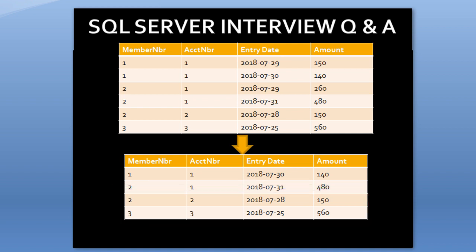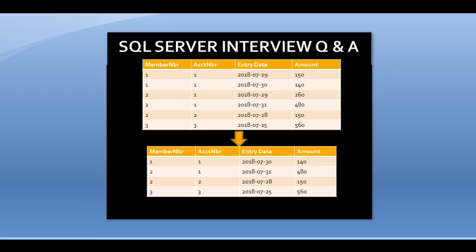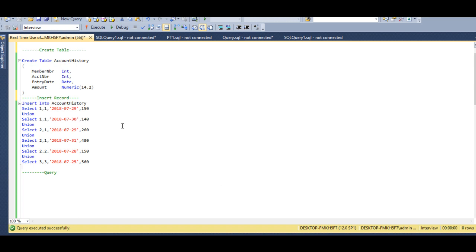We can use an aggregate function with GROUP BY to get this output, but that query will not be good for performance when dealing with an account transaction table that contains millions of rows. So how can we achieve this without using GROUP BY and aggregate functions? We can use ROW_NUMBER, which is also very good for performance. Let's move to SQL Server Management Studio to write the code. I'm using SQL Server 2014, but the query would be the same for all versions.